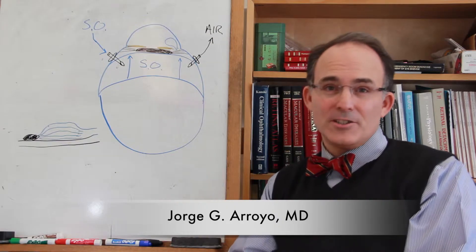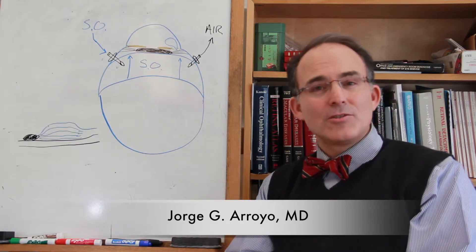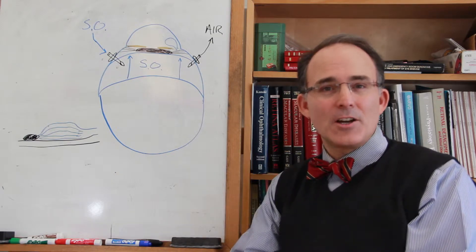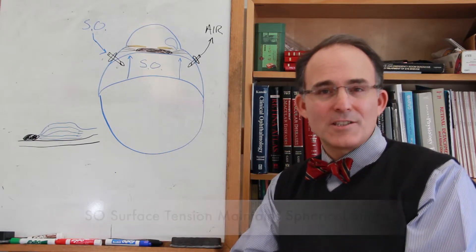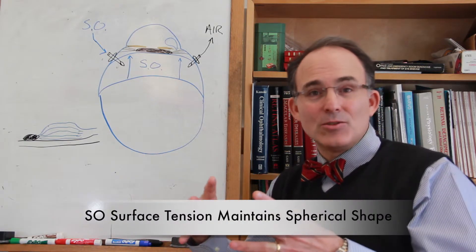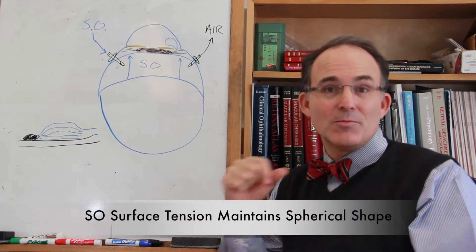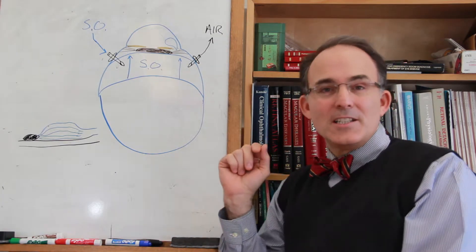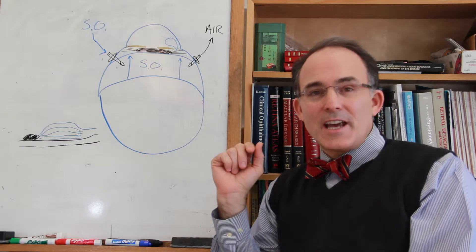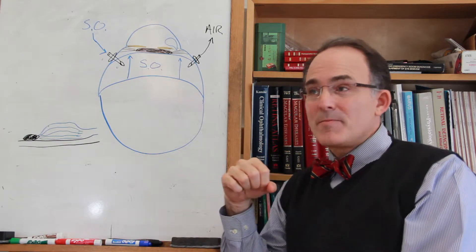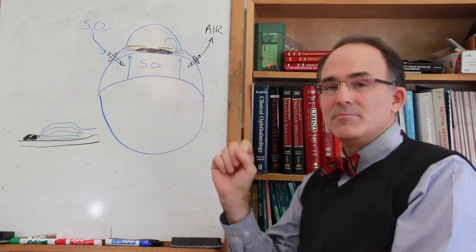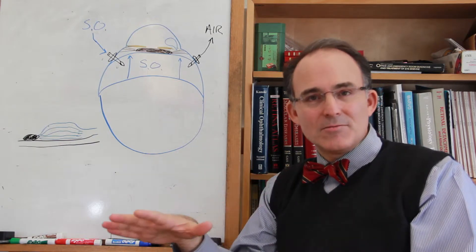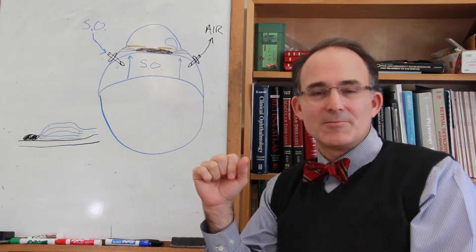Due to surface tension, silicone oil tends to be relatively cohesive and wants to remain as a single spherical bubble. When it is injected into the vitreous cavity, as in this case, and it reaches the artificial lens,